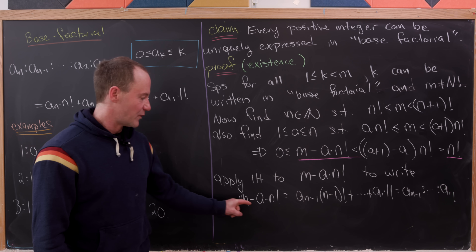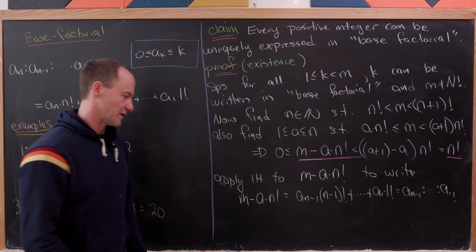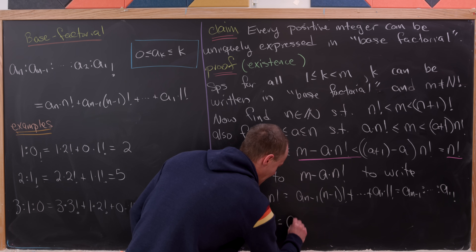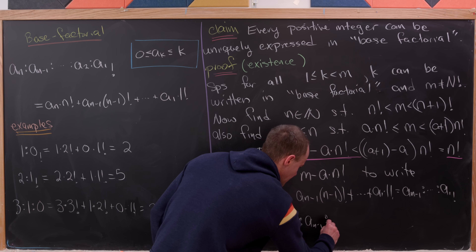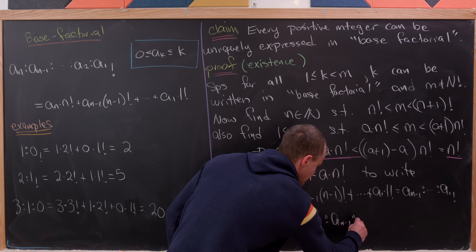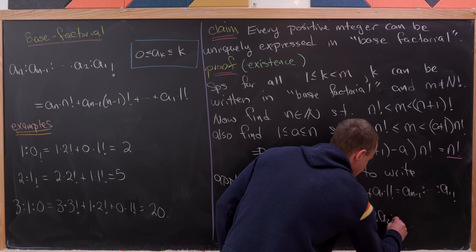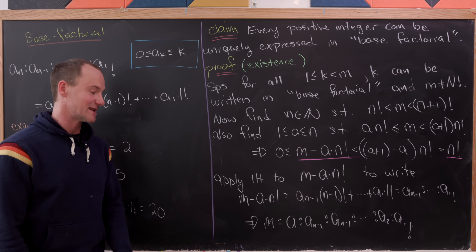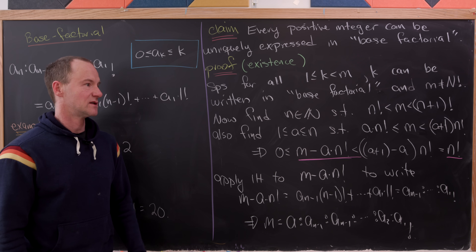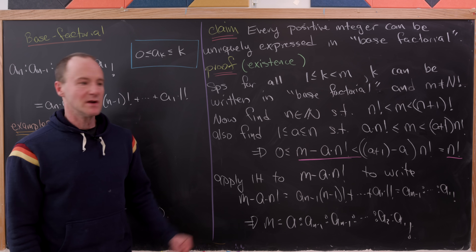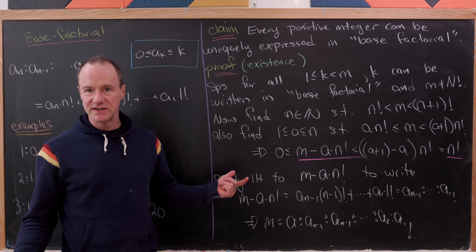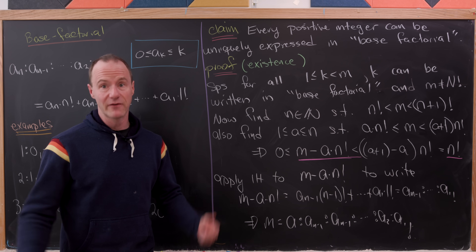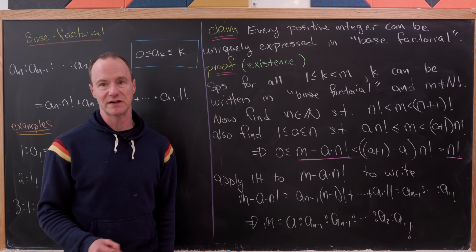Adding a times n! to both sides, we're left with m equal to (a : a_{n-1} : a_{n-2} : ... : a_2 : a_1) sub factorial. In other words, we have expressed m in this factorial base number system. This is exactly what we needed to do for the induction proof — yes, we can express every positive integer in this base factorial number system.